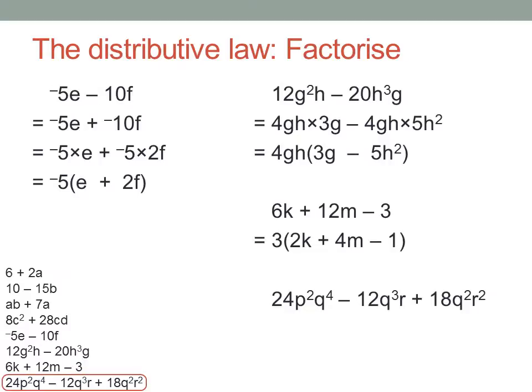Okay, and finally, a tricky combination of those things. 24p squared q to the power of 4 minus 12q cubed r plus 18q squared r squared. What's the highest common factor? Can you work it out? Look at the numbers. What number divides all three of these? It's 6.